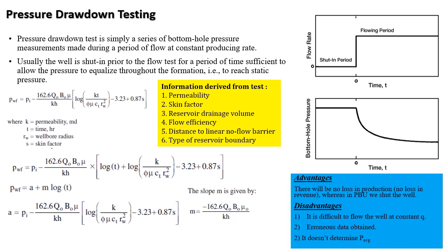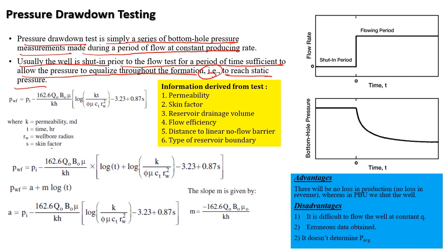A pressure drawdown test is simply a series of bottom hole pressure measurements made during a period of flow at a constant producing rate. Usually, the well is shut in prior to the flow test for a period of time sufficient to allow the pressure to equalize throughout the formation, i.e., to reach static pressure. This is the drawdown period, and it's very important that I have a static pressure throughout the formation prior to the drawdown test.